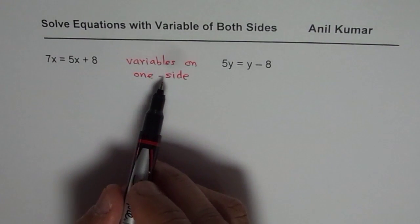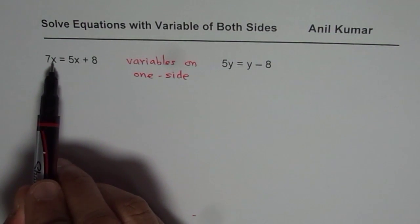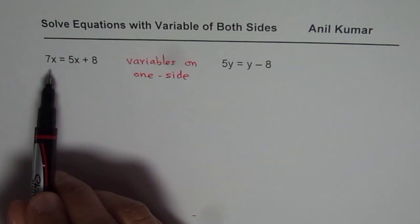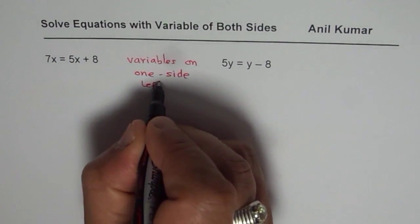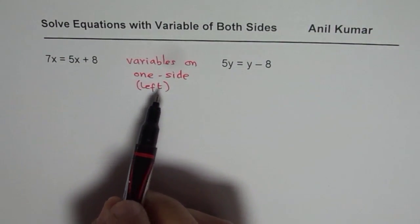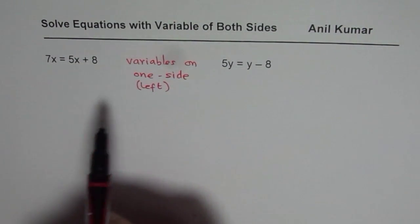Sometimes you prefer to bring variables to the side where the coefficient is bigger. But normally we will prefer to put them on the left side. So in all my examples I will put variables on left side.